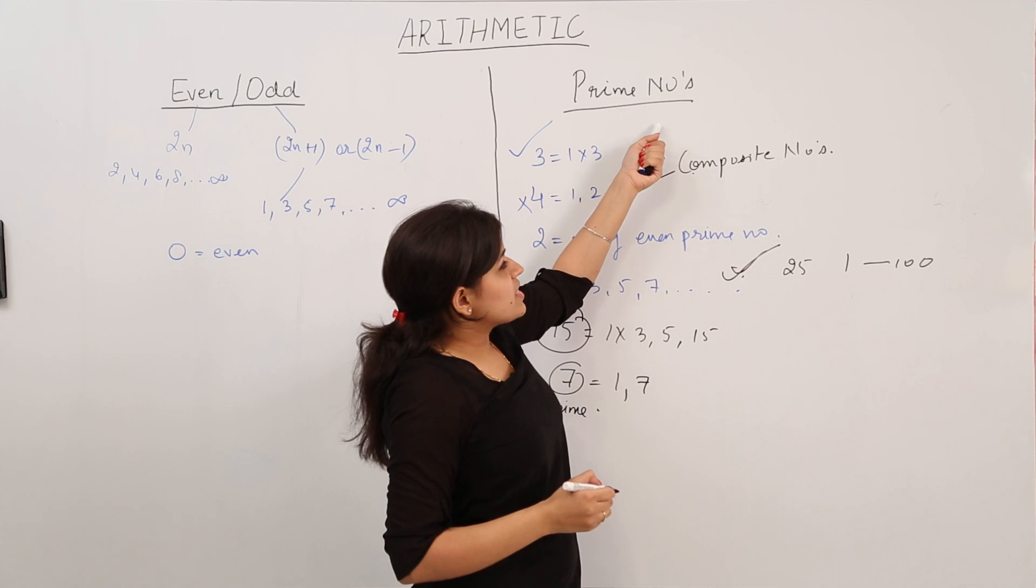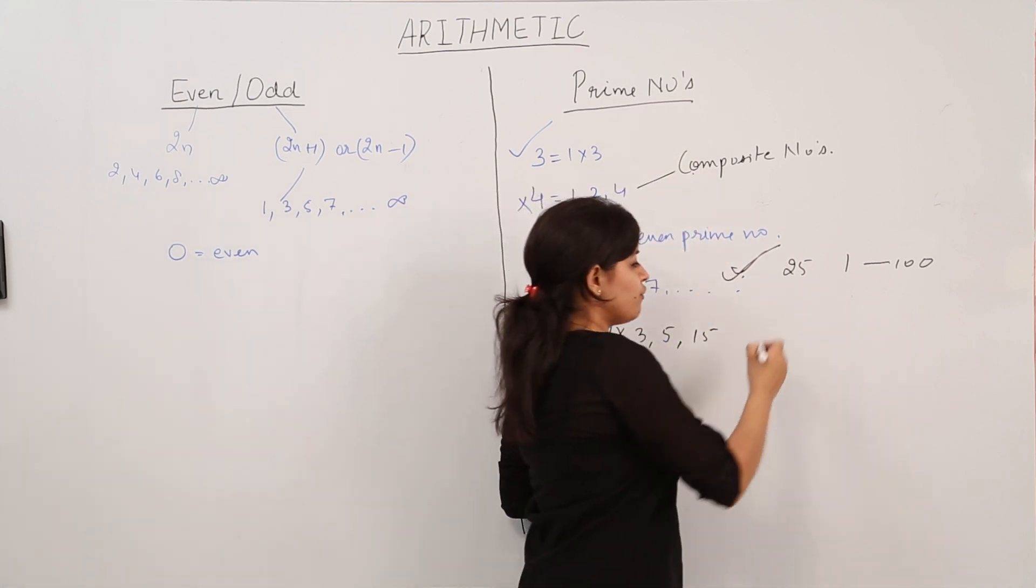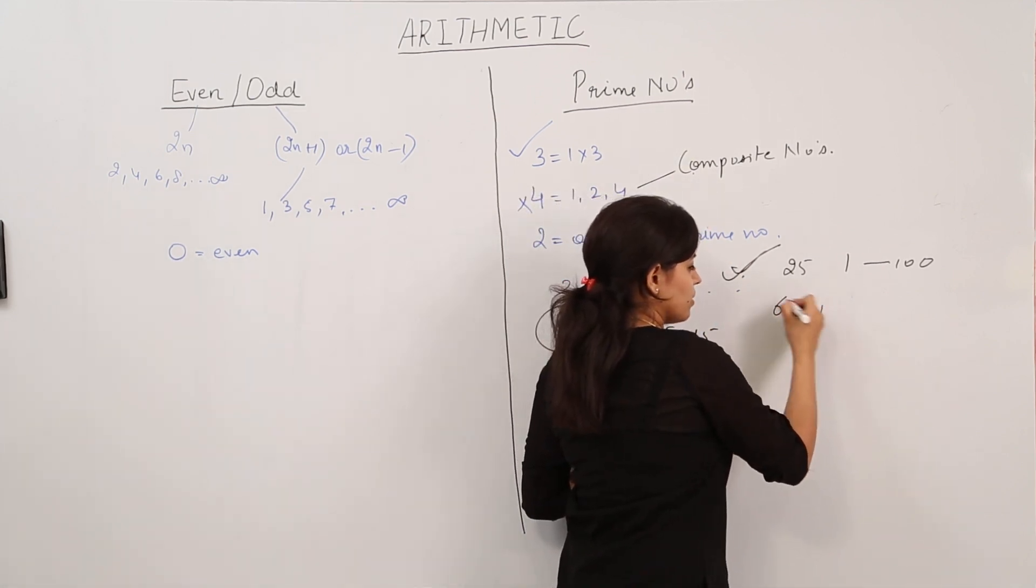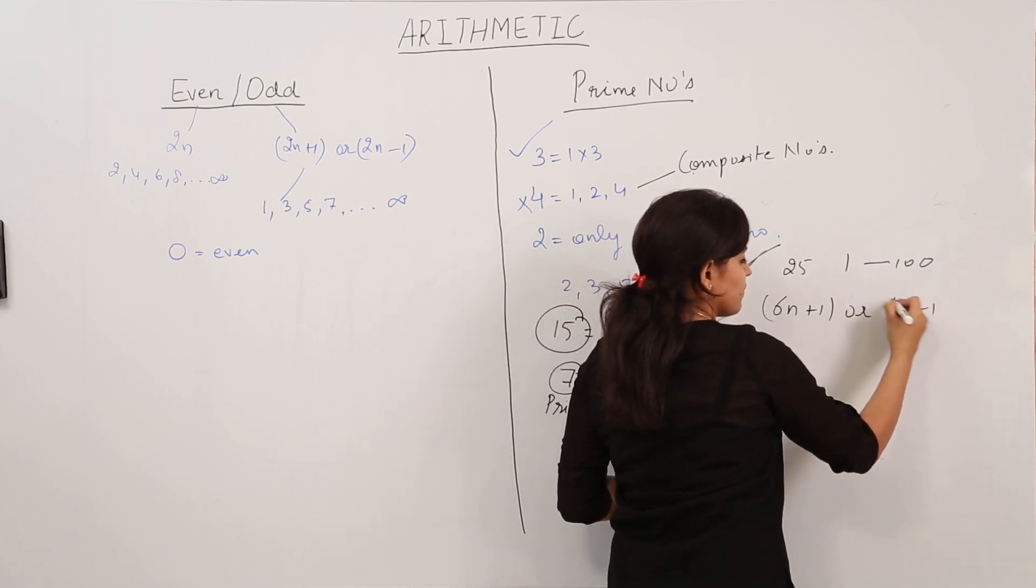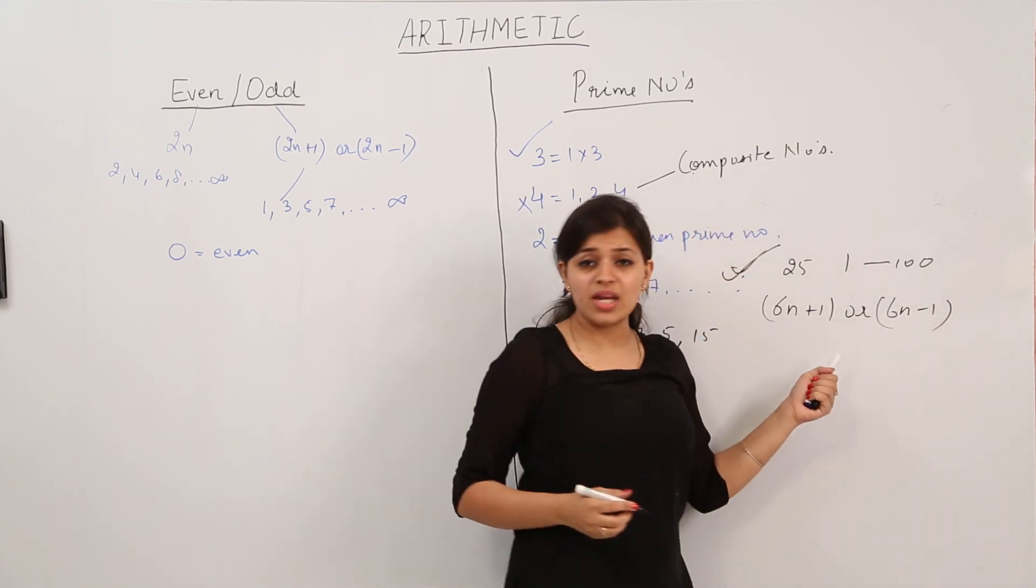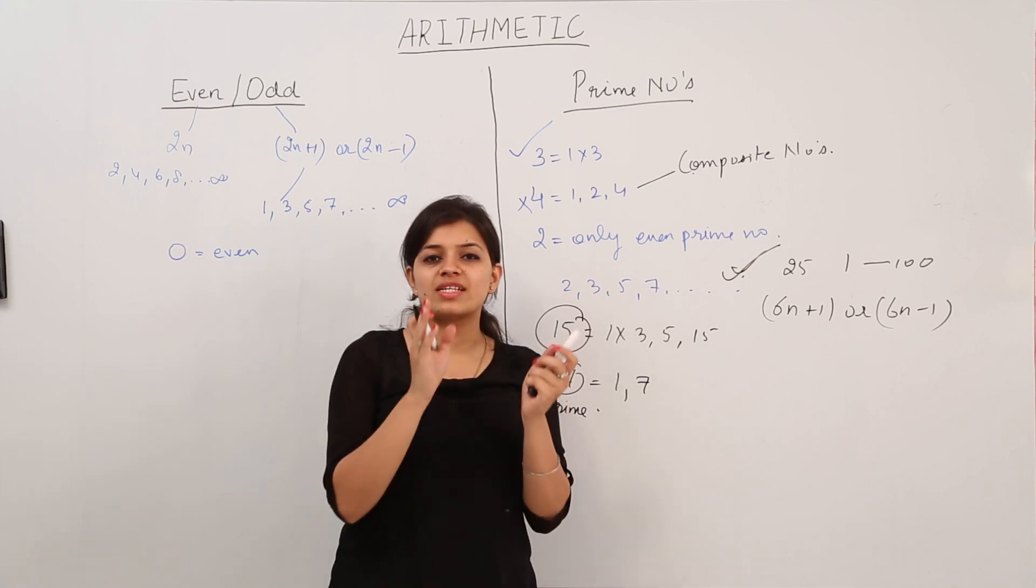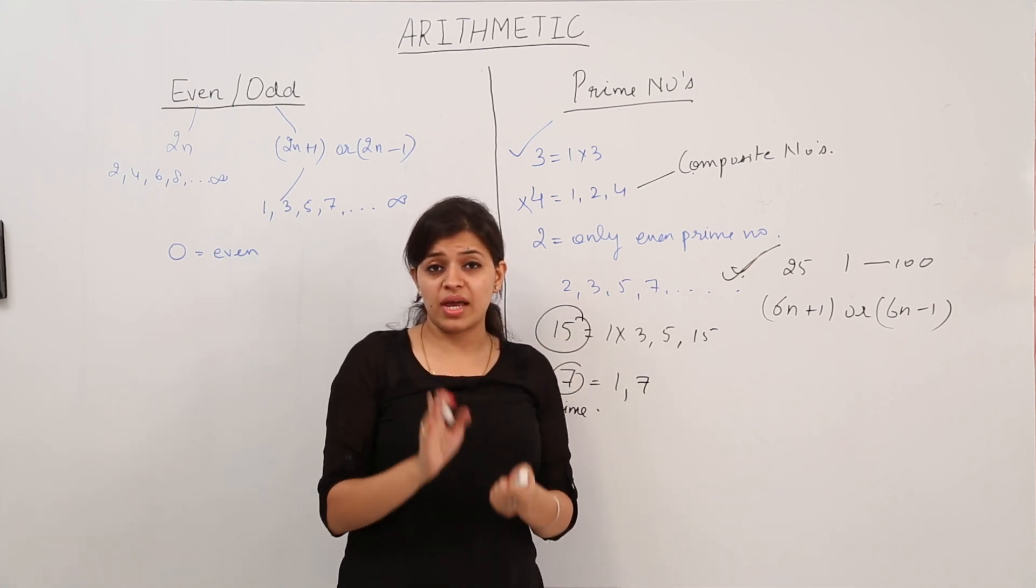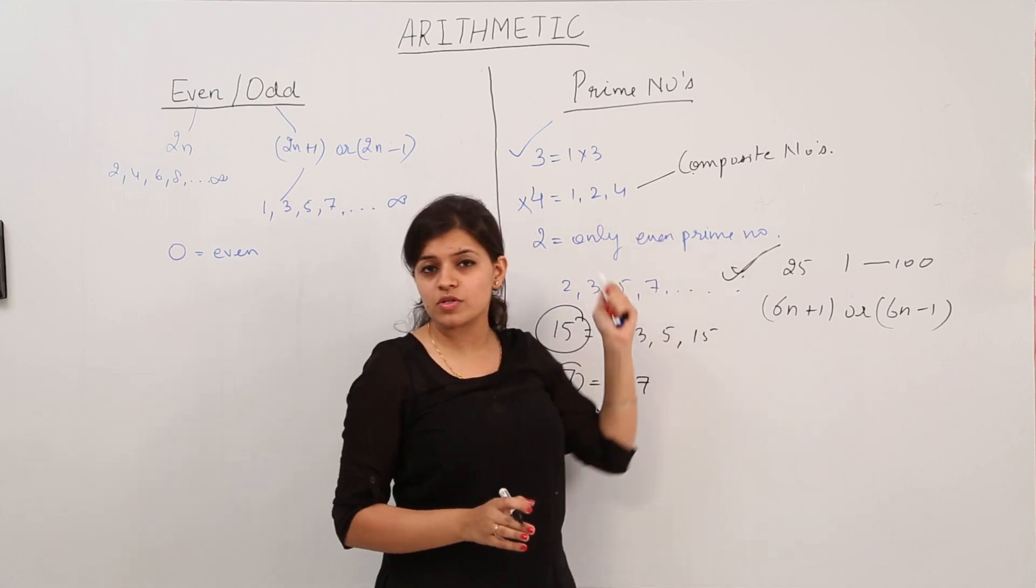All prime numbers can be represented in the form of 6n plus 1 or 6n minus 1, but the other way round is not true. That means all numbers which can be expressed in the form of 6n plus 1 or 6n minus 1 are not necessarily prime numbers.